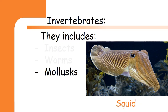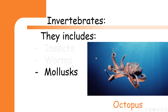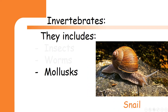We also have molluscs. Molluscs are a group of invertebrates that do not have bones, and most of them live inside the water. Molluscs include animals like squid, octopus, and snail. The snail is an animal that has a soft body and a hard shell above its body.